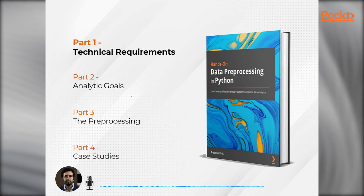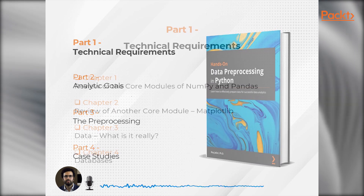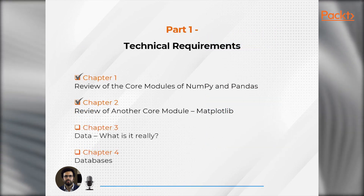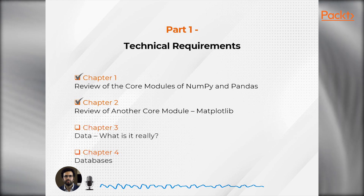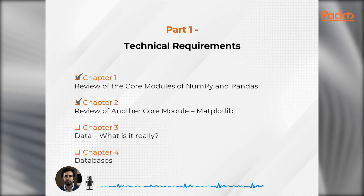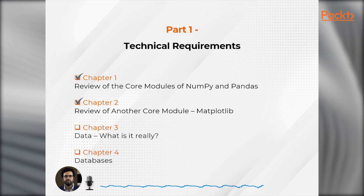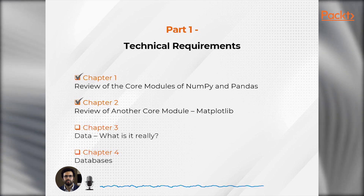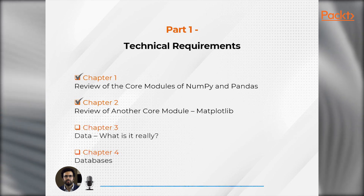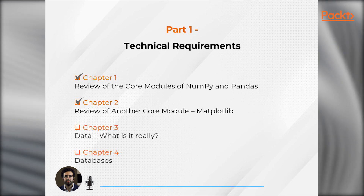Let's start with Part One: Technical Requirements. This part covers four chapters. In the first two chapters, we will learn about three core Python modules: NumPy, pandas, and matplotlib. To be able to use these chapters, one needs to be comfortable with basic programming concepts such as defining variables, loops, and conditionals.